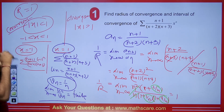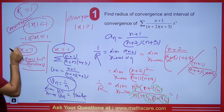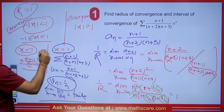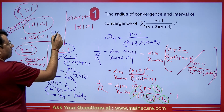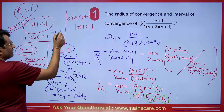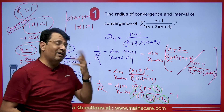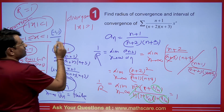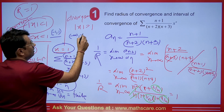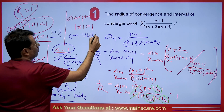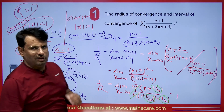The series is divergent at x = 1 and convergent at x = −1. So the interval of convergence is [−1, 1) — closed at −1 and open at 1. The series is divergent on (−∞, −1) ∪ [1, ∞).